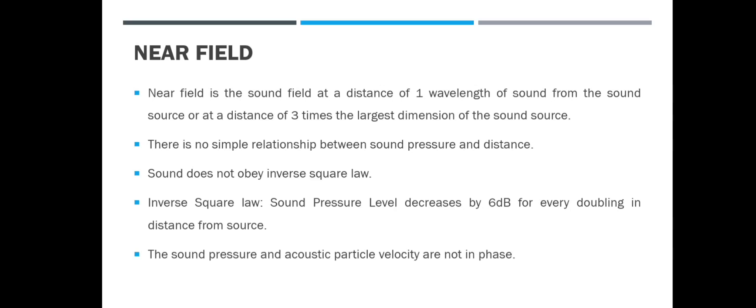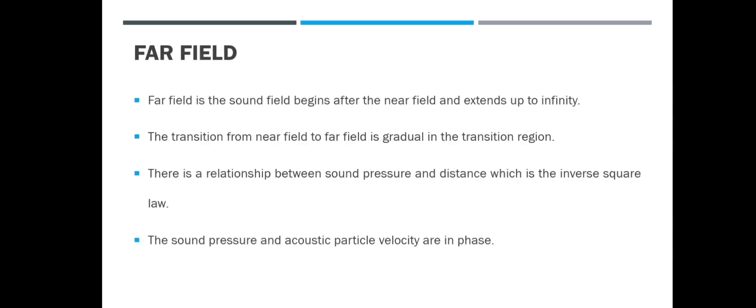Also in the near field, the sound pressure and the acoustic particle velocity are not in phase. Now, far field is a sound field that begins after the near field ends and extends to infinity. There is a gradual transition between the two. Far field is the opposite of near field in that it obeys the inverse square law — sound pressure level decreases by six decibels for every doubling in distance — and the sound pressure and acoustic particle velocity are in phase.